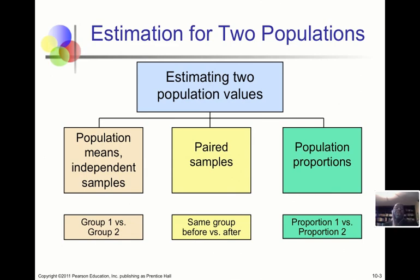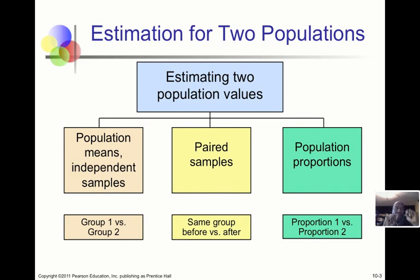However, we do have cases where the samples are connected. For example, if we wanted to determine whether a particular study technique helps students get better grades, we could have students take an exam, run them through a training program, and then do a similar exam afterward. We would compare the before and after scores for the same individuals — we refer to those two samples as being paired.